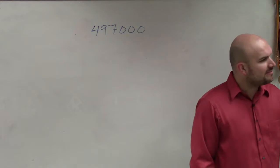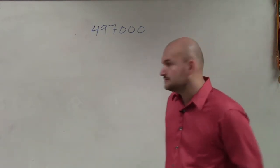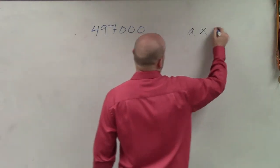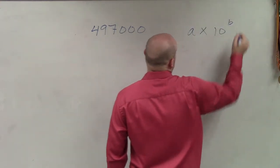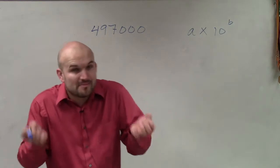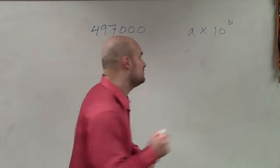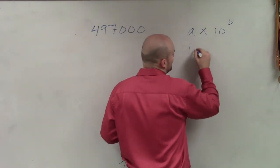The first thing we have to remember when doing scientific notation is we have a times 10 to the b power, where remember, a has to be between 1 and 10. So we write it like this.